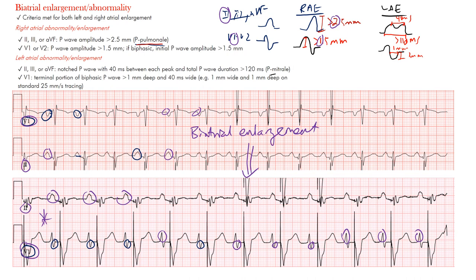To summarize: meet the criteria for both left and right atrial enlargement. For right atrial enlargement in the inferior leads, the P wave is at least 2.5 millimeters and peaked. In V1 or V2, the initial portion is at least 1.5 millimeters. For left atrial enlargement, in the inferior leads look for width and the M-shaped notched P wave — it's mostly about duration.